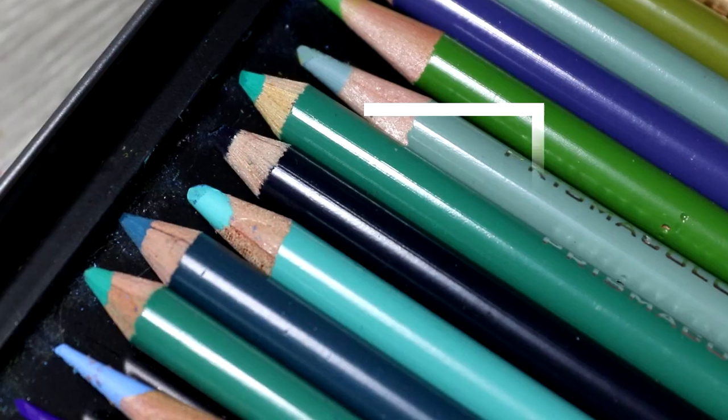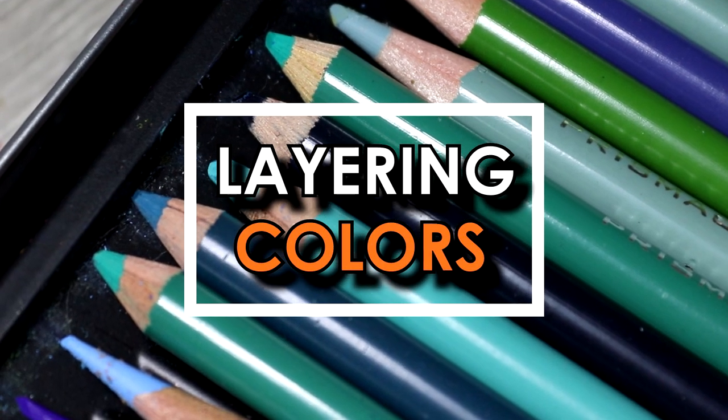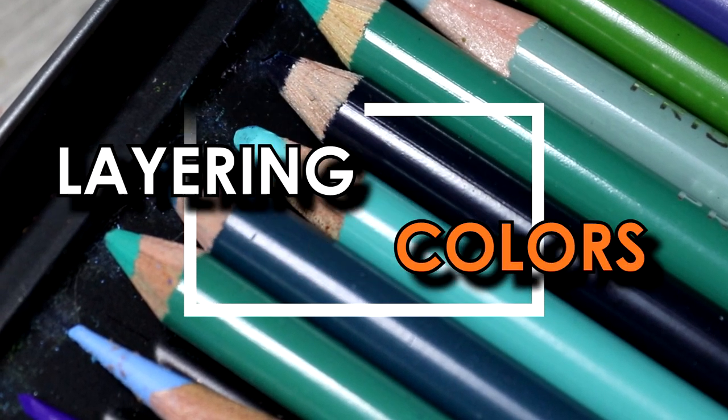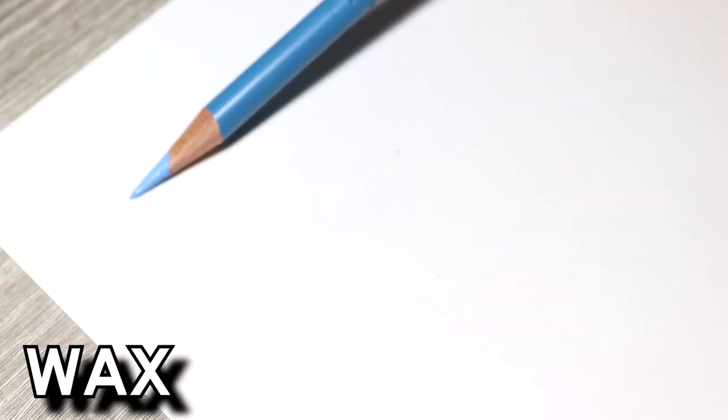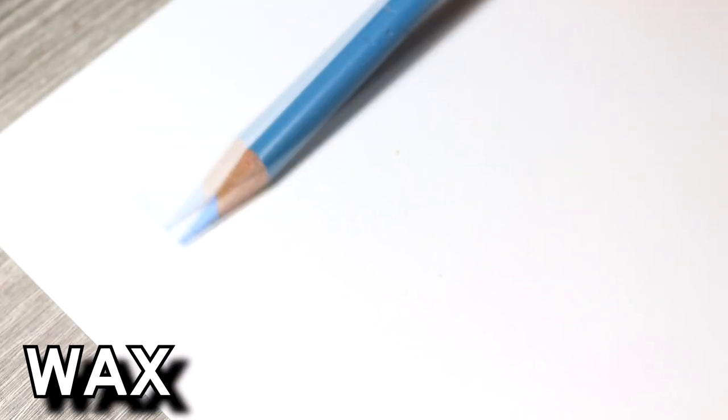Let's first talk about layering. Wax pencils are made up of a waxy binder and oil pencils are made up of an oil binder. Binders hold the pigment together and allow it to spread over the surface of the paper.